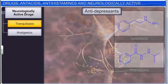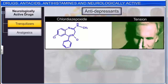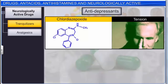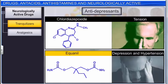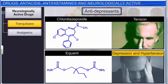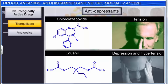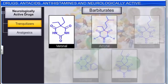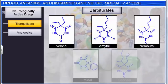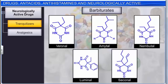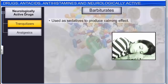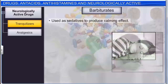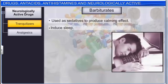The relatively mild tranquilizer chlordiazepoxide helps relieve tension. Another tranquilizer, equanil, is used to control depression and hypertension. Another important class of tranquilizers is barbiturates, which includes derivatives of barbituric acid such as veronal, amytal, nembutal, luminal, and seconal. Barbiturates are used as sedatives to produce a calming effect, and also as hypnotics to induce sleep. Other examples of this class are valium and serotonin.